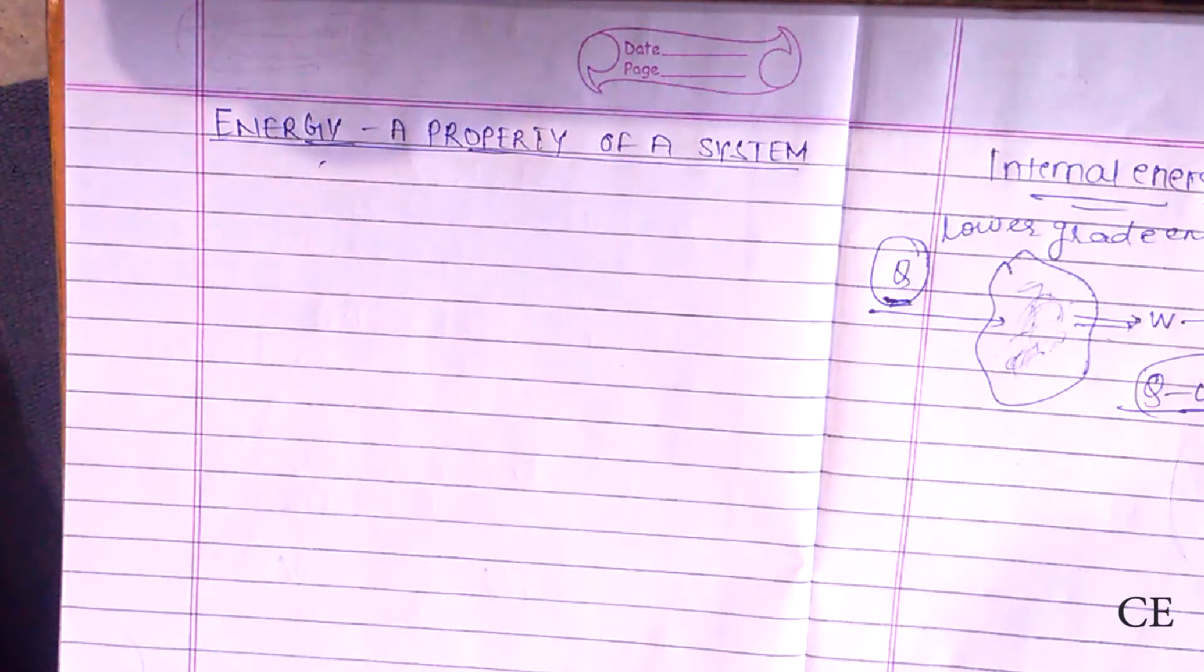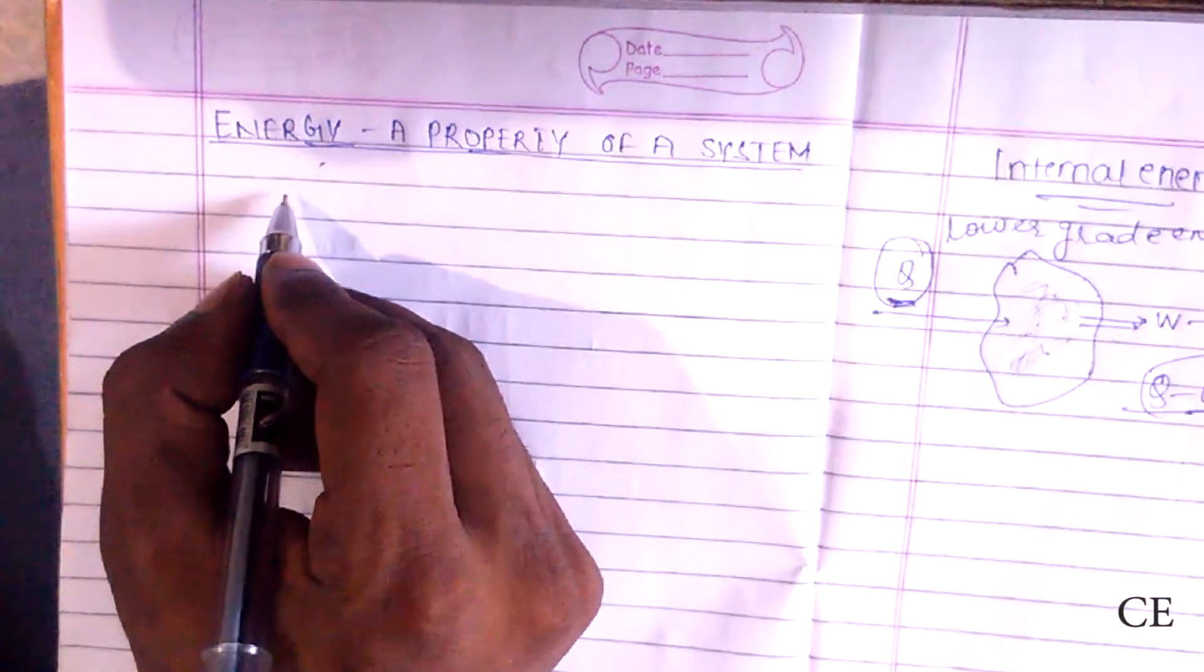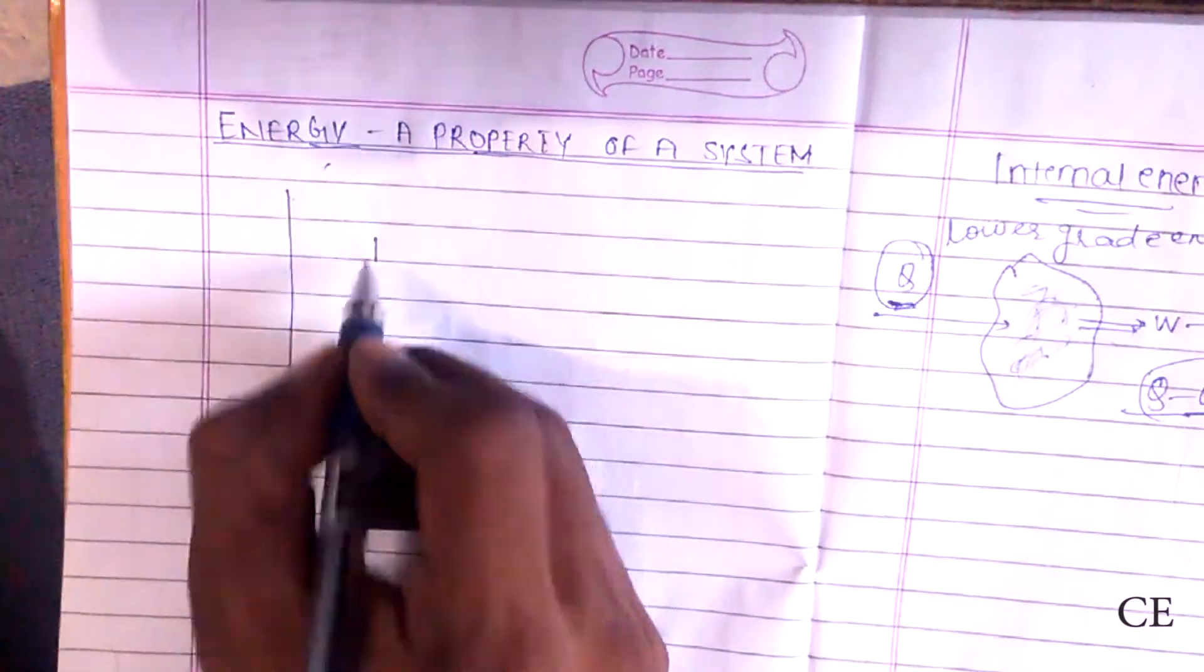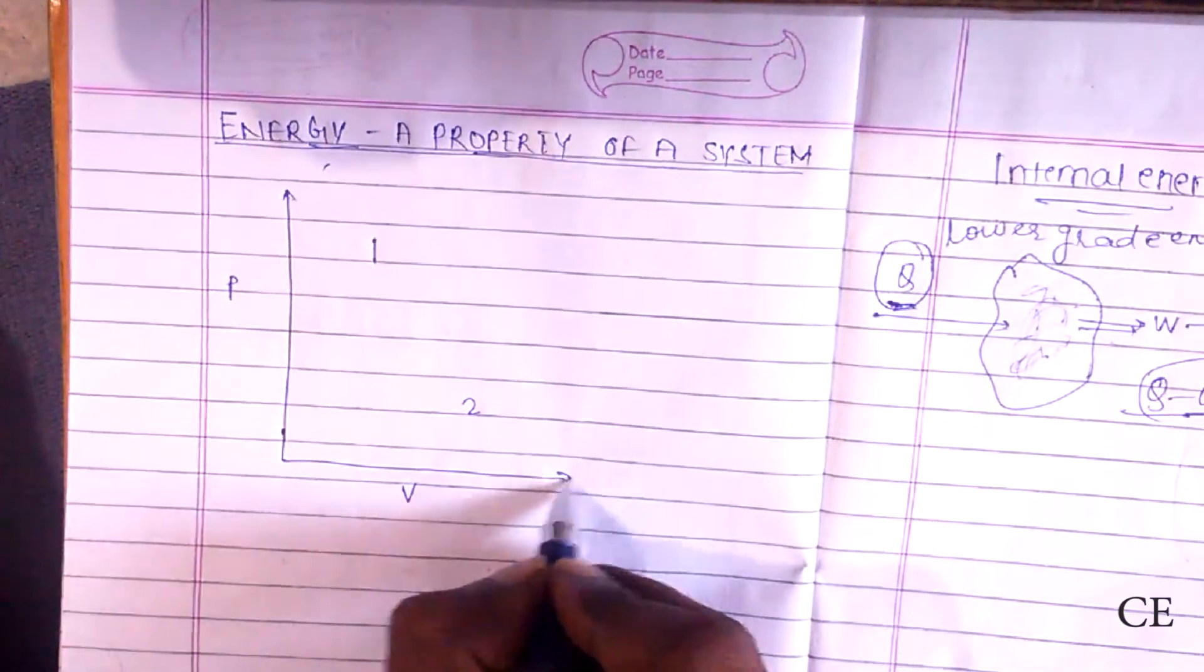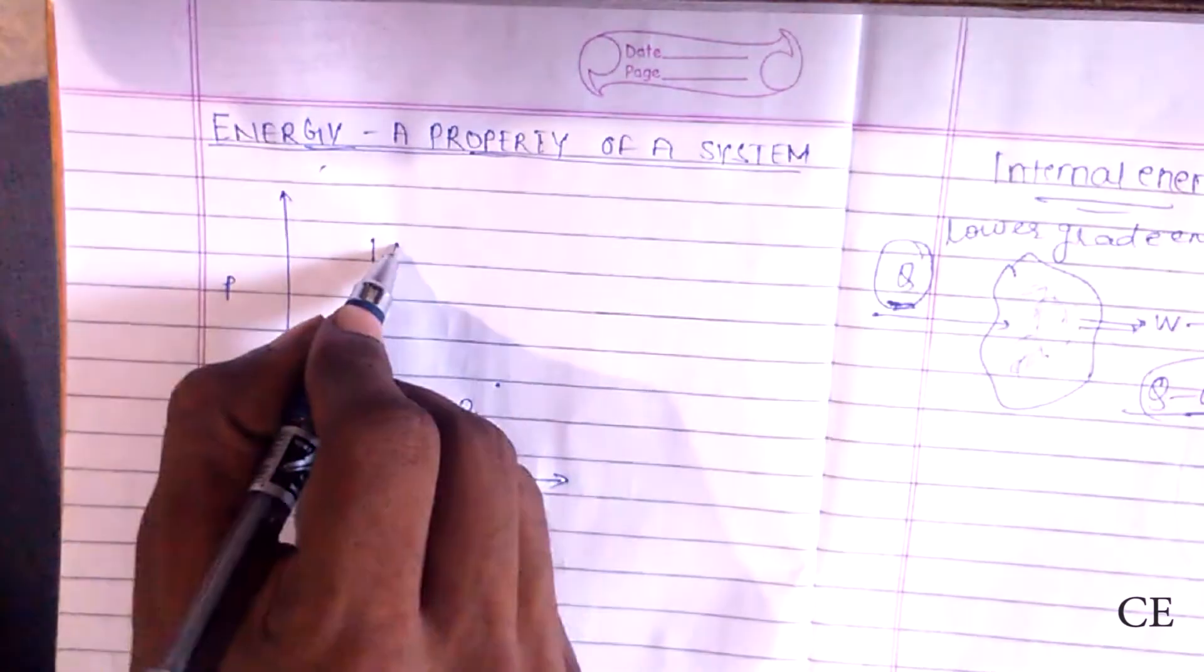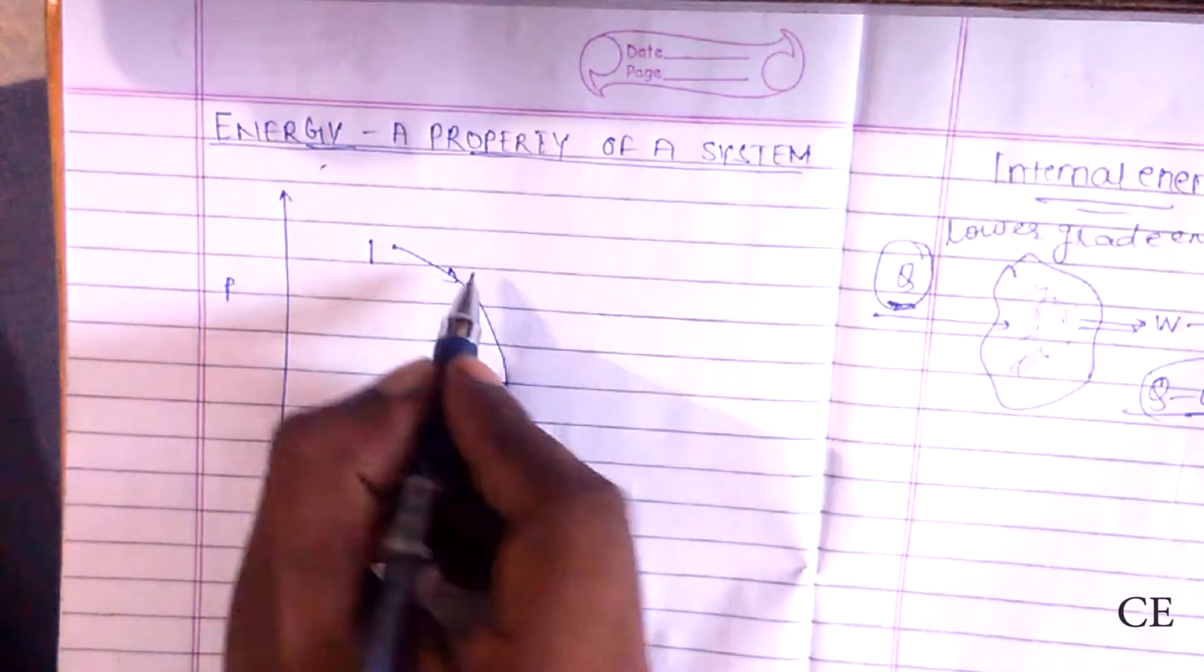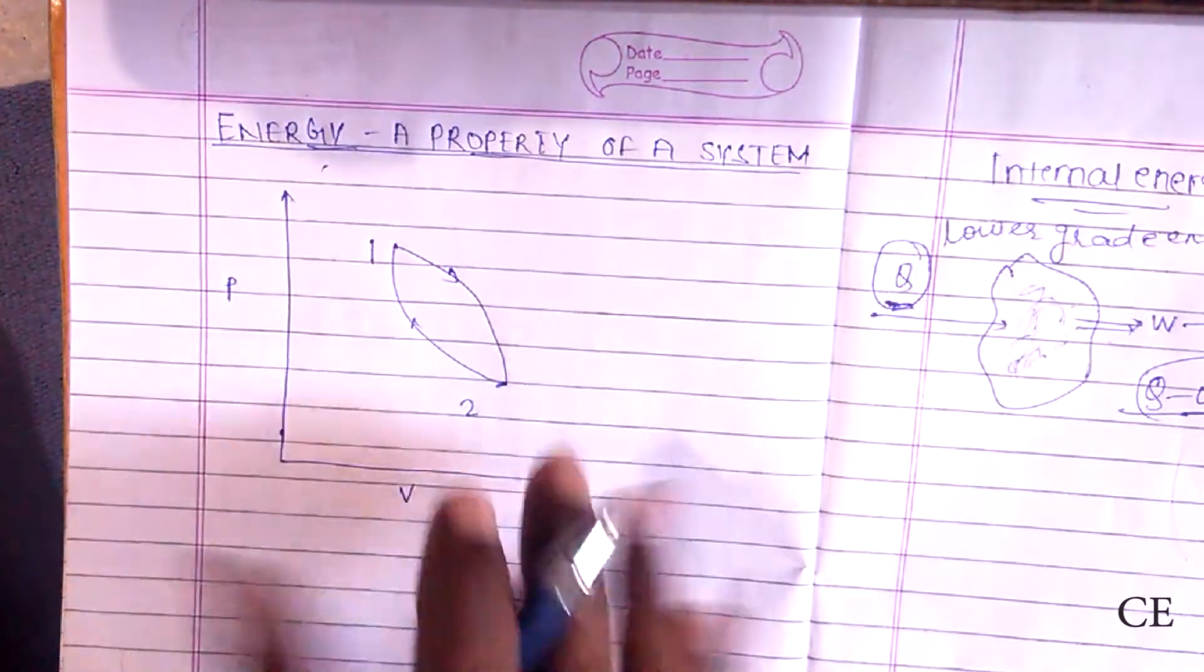Suppose there are two states, one and two, and it is a PV curve. It goes from state one to state two from two different paths. It goes from state one to two using this path, and from two to one from this path.